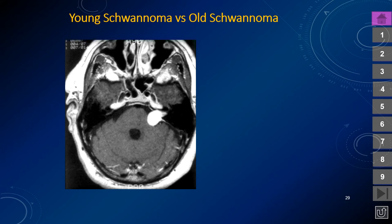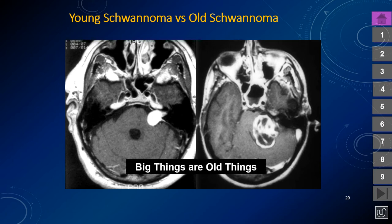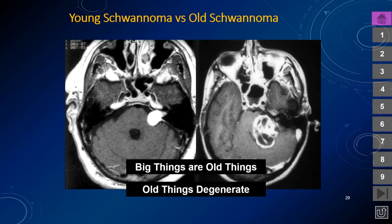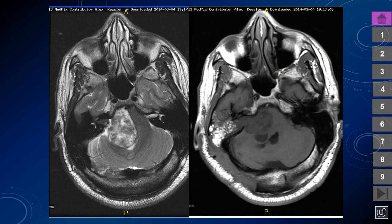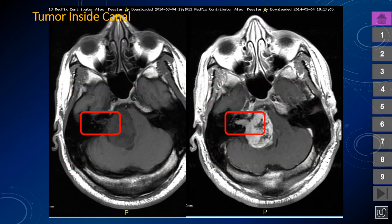This patient has a young schwannoma with tumor inside the canal as well as in the cistern. A larger schwannoma shows benign cystic degeneration — this is not necrosis but rather expected degenerative change in older lesions. Another example of a large cerebellopontine angle mass has become heterogeneous and lobulated; the right internal auditory canal contains soft tissue instead of CSF, and there is trapping of fluid in the mastoid air cells. The lesion is clearly involving the internal auditory canal.